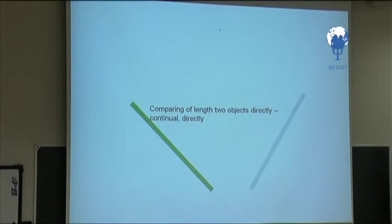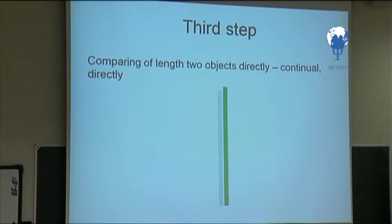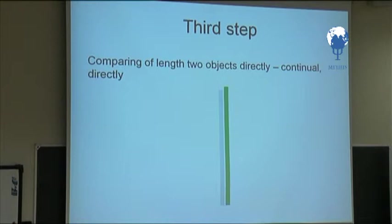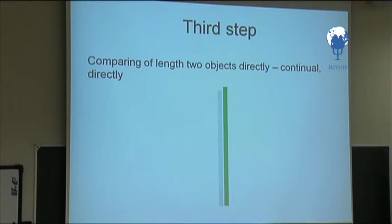Now it is necessary to compare the length of two objects directly. This is continuous and this comparison is made directly. You can see — compare the length of two objects directly. Now the child can say which is very small.